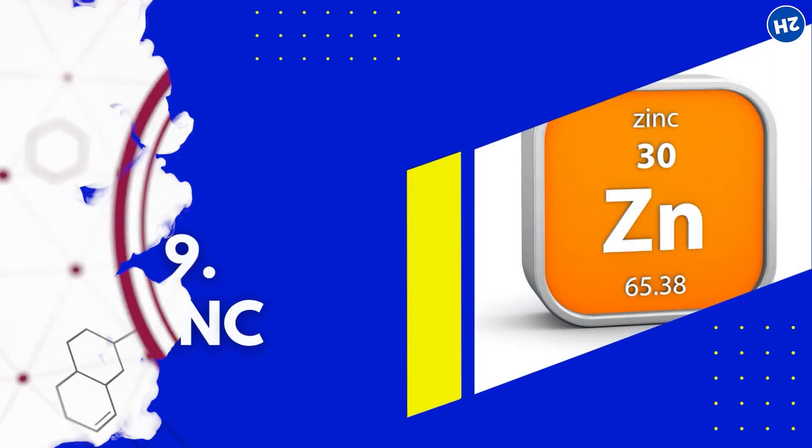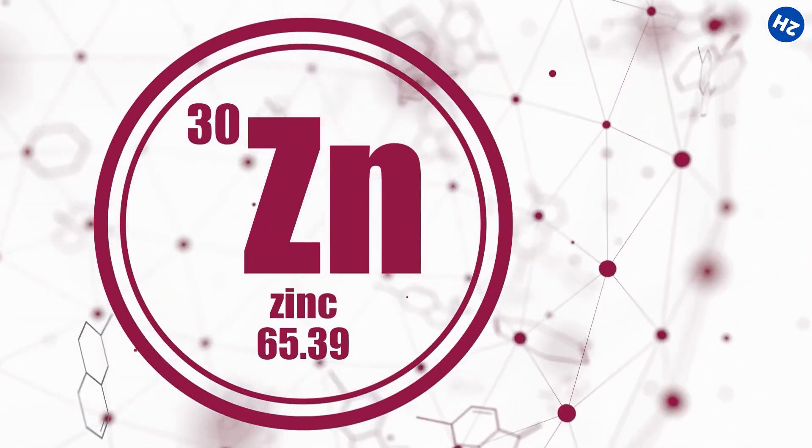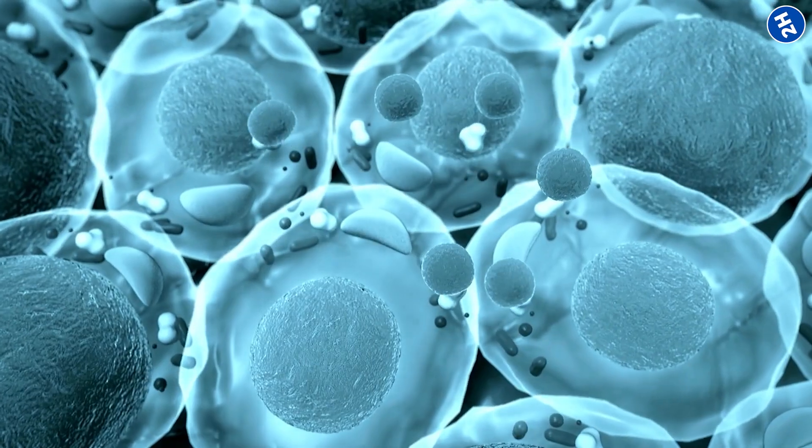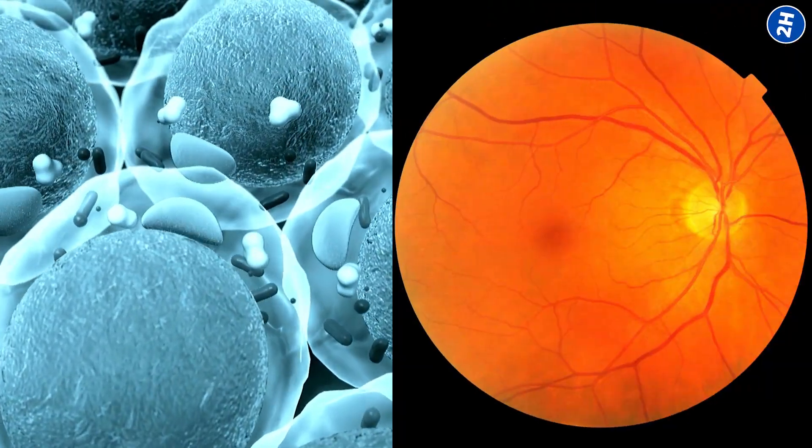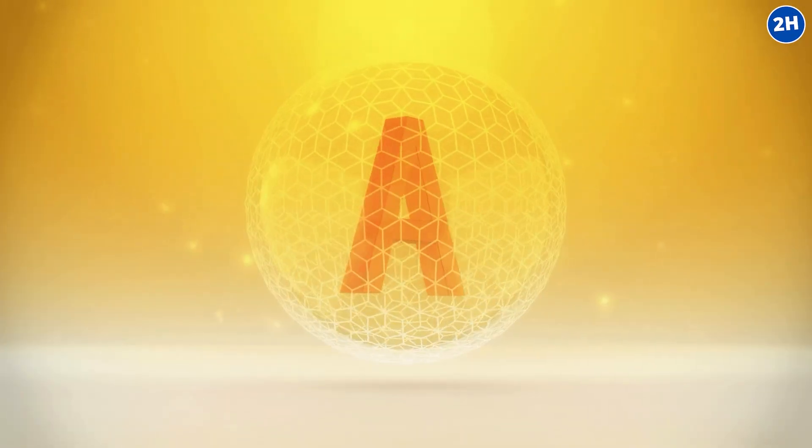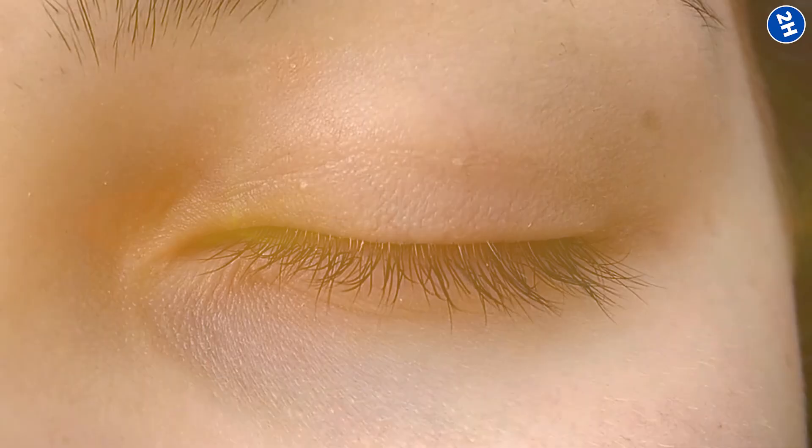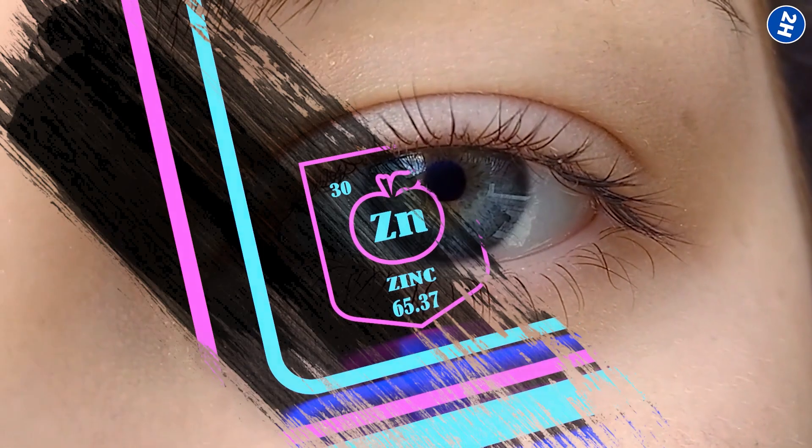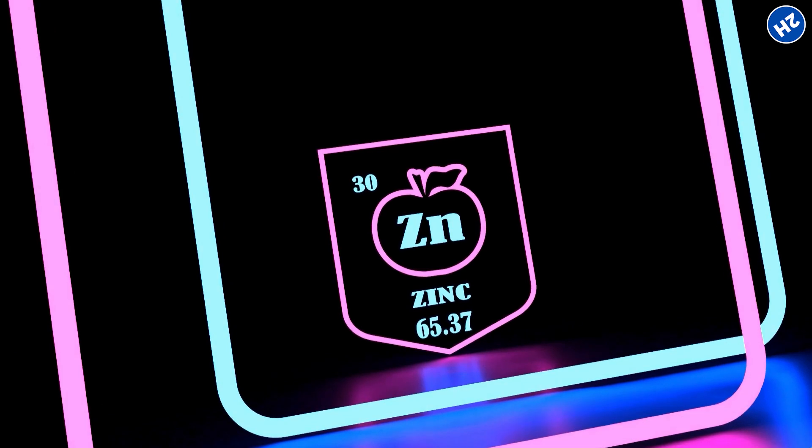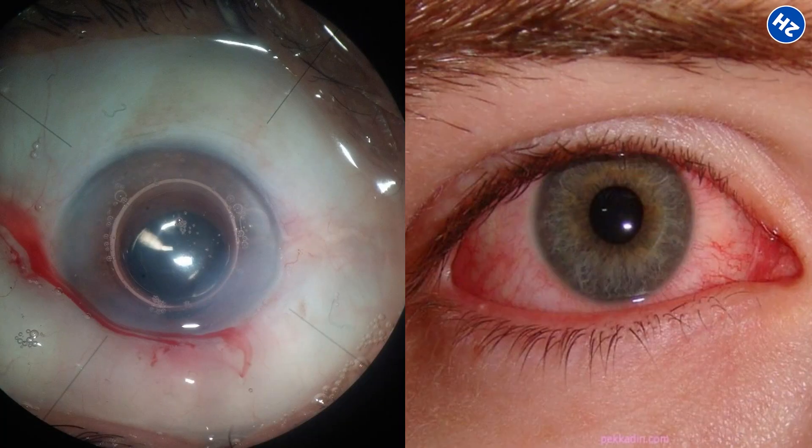Number 9. Zinc. Zinc is a key factor when it comes to maintaining healthy vision. It helps maintain the health of cell membranes, retina, and protein structures of the eye. Also, it is essential for transporting vitamin A from the liver to the retina, where it is converted into melanin, an eye pigment that provides protection. Zinc deficiency has been associated with vision impairments, including cloudy cataracts and impaired night vision.